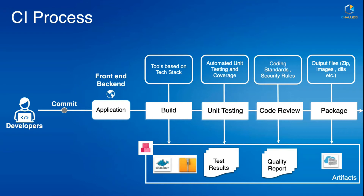Once the build, unit tests, and code review all pass, the final output is a package, which is generated and saved as an artifact for future reference. An artifact can be the output from your build, unit test cases, code review, or the final package itself. Anything you need to share with an external process or system needs to be saved as an artifact for future access or reference.